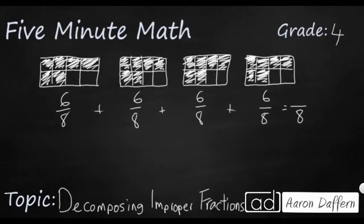6, 12, 18, 24. So I've got 24 eighths. How can I decompose that in different ways? Well, when you see the 24 and 8, you should be thinking of a multiplication fact. 8 times 3 makes 24.